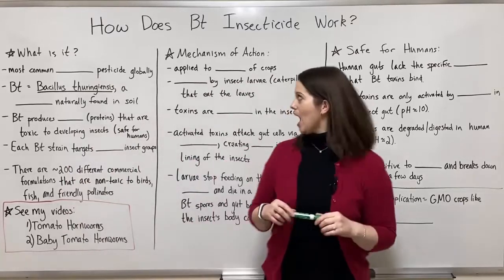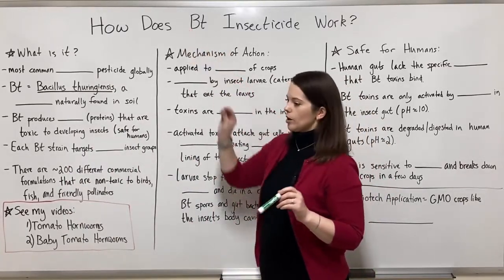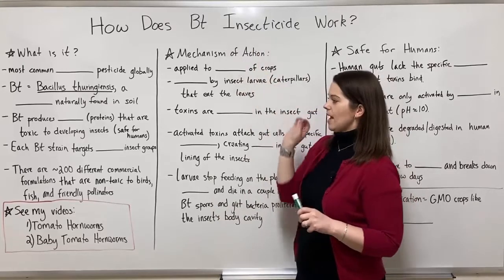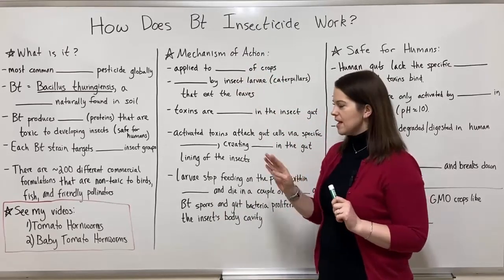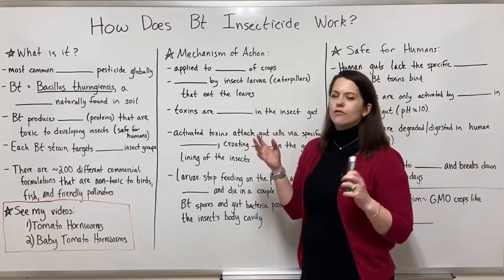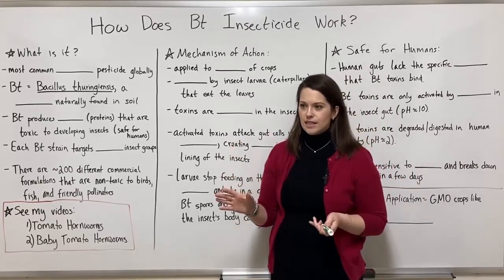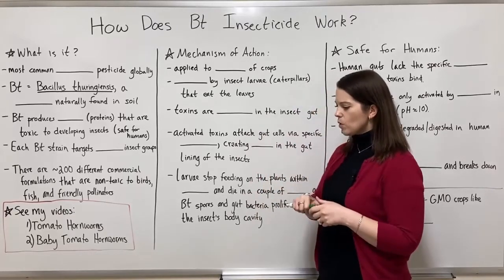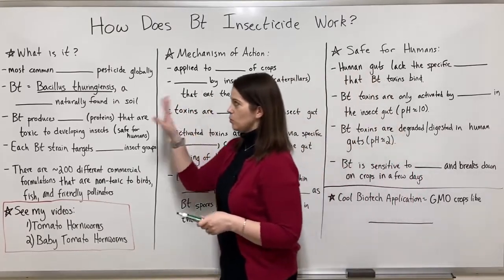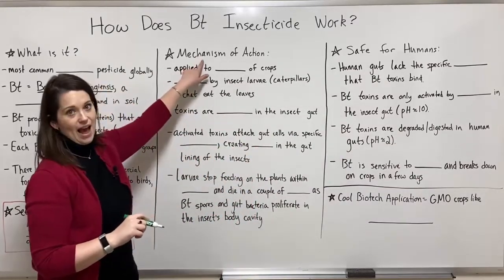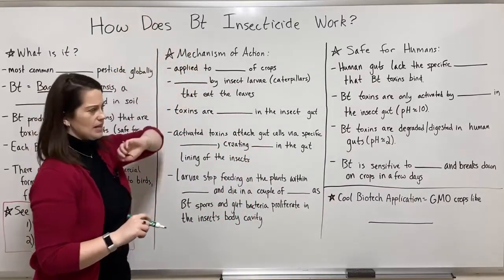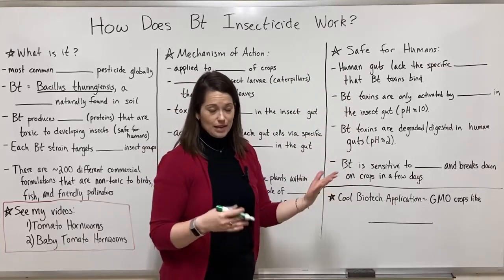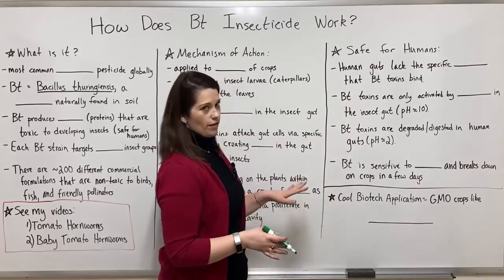Today we're talking about how does BT insecticide work. If any of you are gardeners, you may be familiar with BT insecticide. What I think is so cool from a biology perspective is that we see things we learn about in class — things like selective toxicity, protein structure, cell signaling, and receptors. I'm going to do this lesson in three parts: what BT is, its mechanism of action, and why it's totally safe for humans. I put it on my tomato plants and my kids eat my tomatoes — very, very safe.